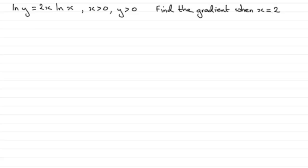Now for this question we're given that the natural log of y equals 2x times the natural log of x, where x is greater than 0 and y is greater than 0, and what we've got to do is find the gradient when x equals 2.